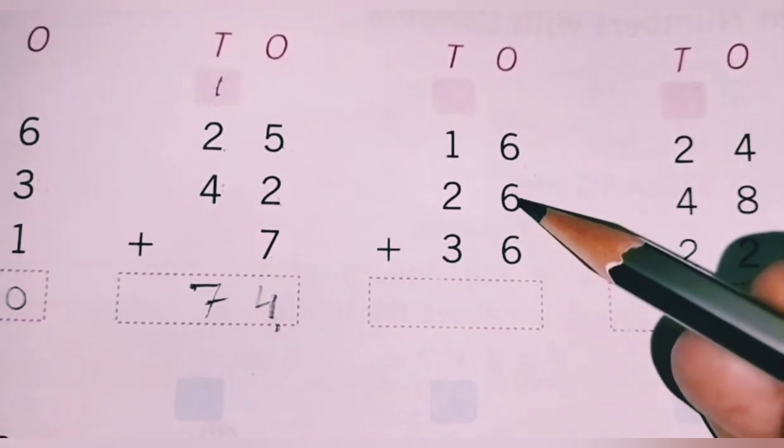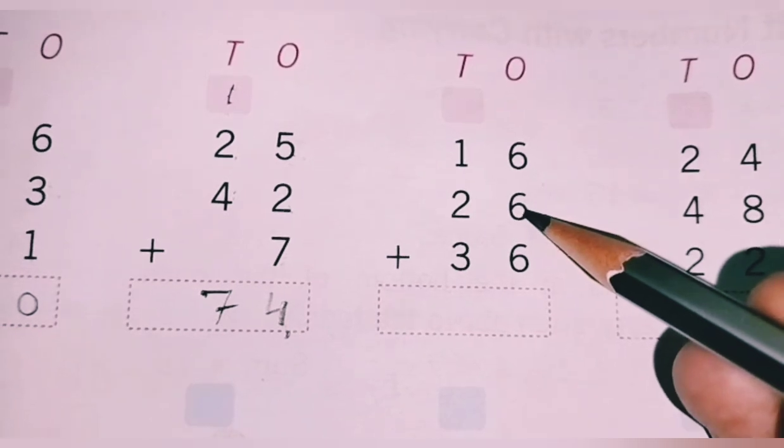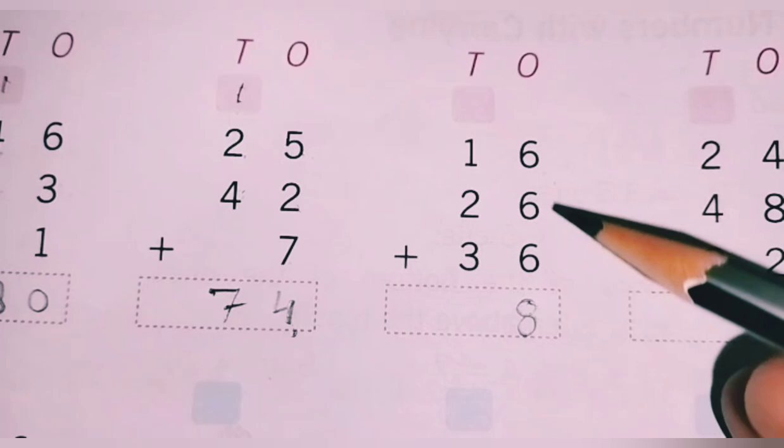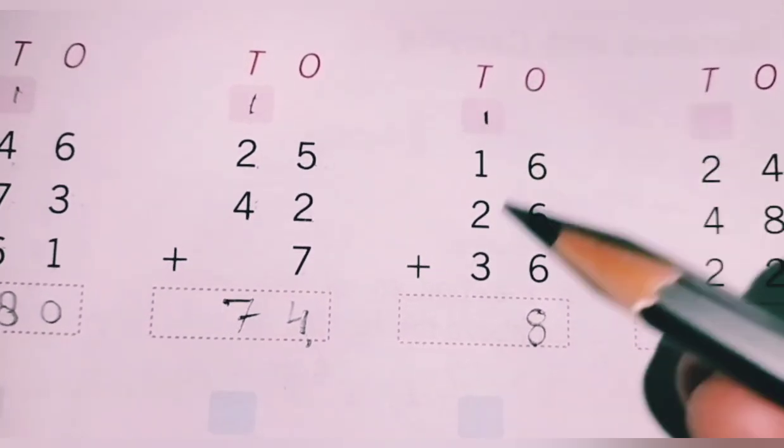Open number 6. Here is 6. 6 plus 6, 12. How much is it? 18. 8 here. 1 carry up.